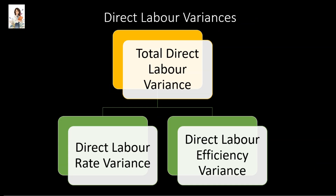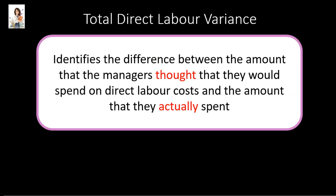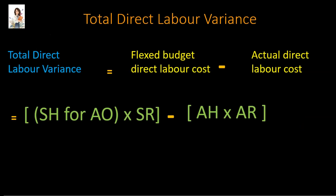Now we must study the direct labor variances. The variance on the direct labor cost can be due to two things. If a higher or lower wage rate was paid than was budgeted for, this difference is called the direct labor rate variance. If more or less direct labor hours have been used than were budgeted for, this difference is called the direct labor efficiency variance. Total direct labor variance identifies the difference between the amount managers thought they would spend on direct labor costs and the amount actually spent. The formula is: standard labor hours for actual output multiplied by standard wage rate, minus actual labor hours multiplied by actual wage rate.